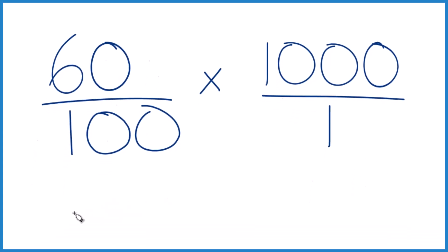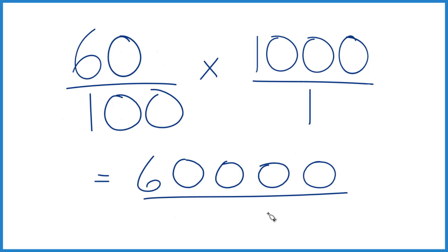60 times 1,000, that equals 60,000. 100 times 1, that is 100. So now when we divide, 60,000 divided by 100, we get 600, just like we got before.